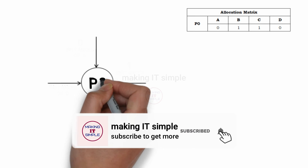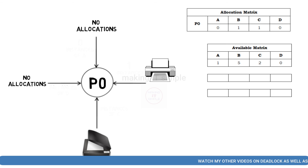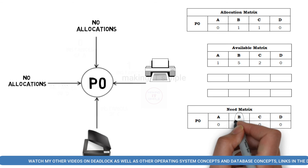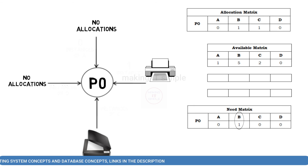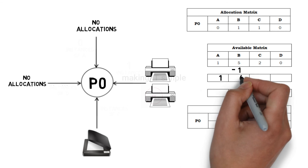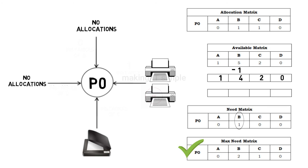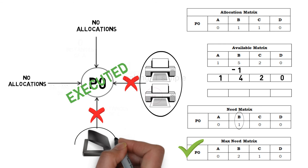According to the allocation matrix, process P0 currently has these resources allocated to it. The available resources we have free are 1, 5, 2, and 0. According to the need matrix, P0 needs just 1 instance of resource B — which is a printer in our example — and we can complete its need. So we provide 1 resource B to P0, and after it gets all resources it needs, it will execute completely and then release all its allocated resources — that is, 2 instances of resource B and 1 instance of resource C.